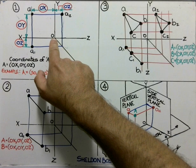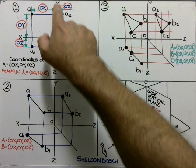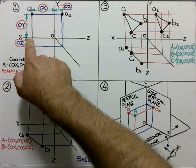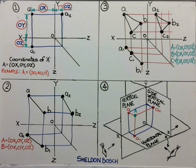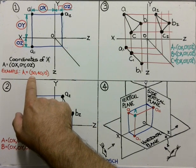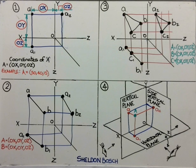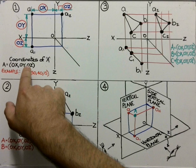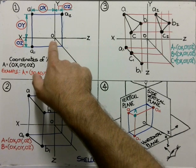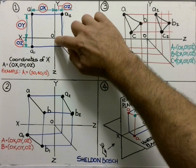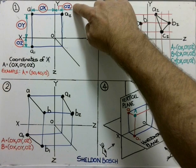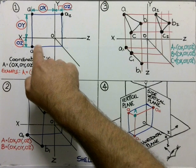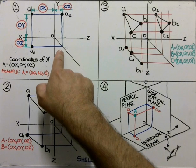If we look at our OX coordinate, it would be the distance away from O — the centre of where the axes collide — along the OX axis. The OY would be from O to the OY side of things, and similarly the OZ. For example, if point A has been given coordinates of 50, 40 and 15, then you must know that OX is first, OY second and OZ third. So 50 would be my OX, 40 would be my OY, and 15 would be on my OZ axis. The distance away from the OX axis would be the same as from the OY axis because of this 45-degree line over here.